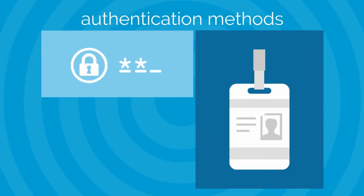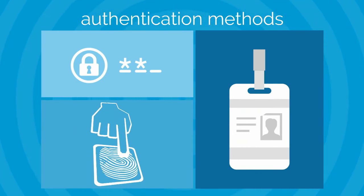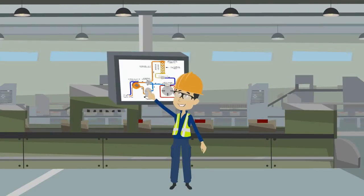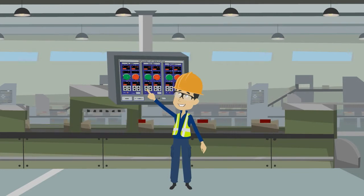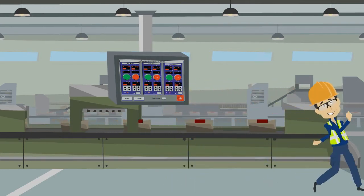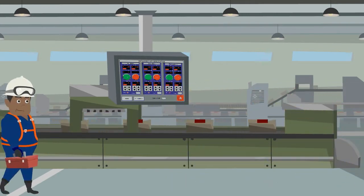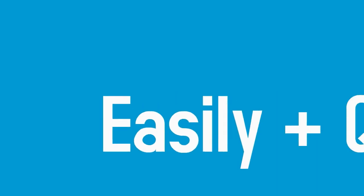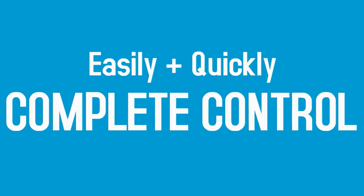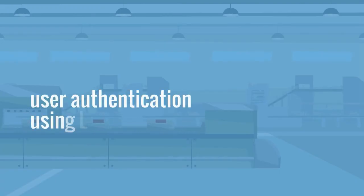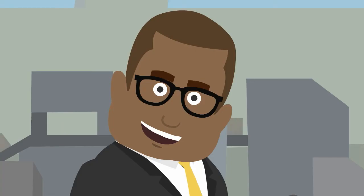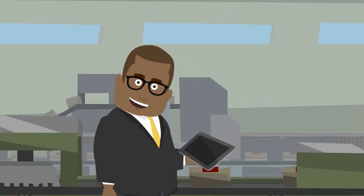Authentication is completed securely using methods like traditional usernames and passwords, ID badge readers, or even biometric fingerprint scanners. Once Jim finishes his objective, he simply logs out and the terminal returns to the default HMI it started with. His data is now safe from anyone else who may use that terminal.